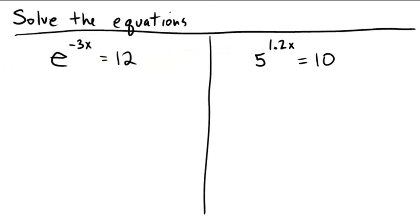Solving some equations! We have e to the negative 3x equals 12. So how do we cancel out an e? Well, we use an ln.